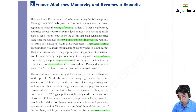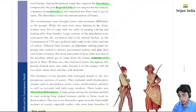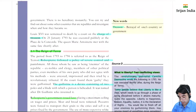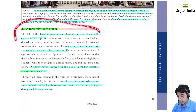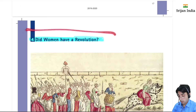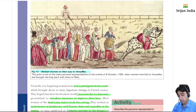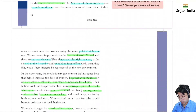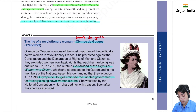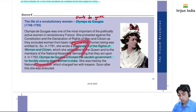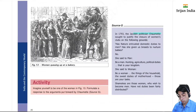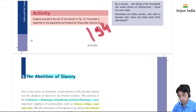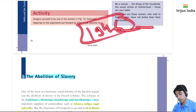France abolished monarchy and became a republic. After that we saw how events progressed through directory rule. In the last video, we saw how women had their own revolution — because women had not even got the right to vote. Many women worked and fought for their rights. Finally, in 1946, women got the right to vote in France.